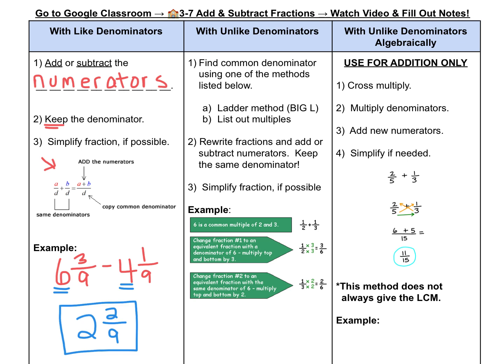But what happens when our fractions have unlike denominators? Let's look in the middle column. Starting at number 1, find the common denominator using either the ladder method to find big L or you can list out the multiples. Step 2 tells us to rewrite the fractions and add or subtract the numerators, and we keep the same denominator and simplify our fraction if possible. We're going to take a look at this example here: 1 half plus 1 third. The denominators are different, so we need to find a common denominator, preferably the least common.